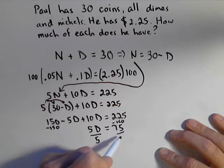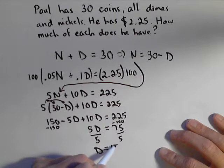Last step, the number of dimes is going to be 75 over 5, which is 15.